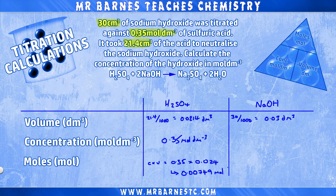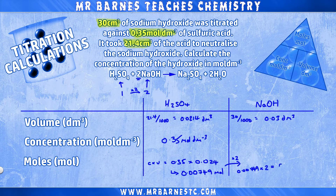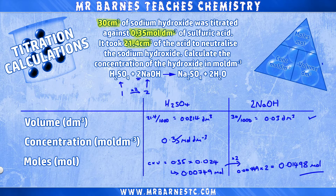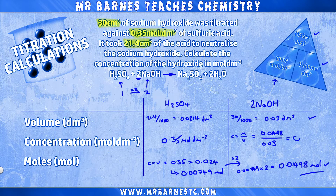Now here's the extra step. We have a ratio of 1 to 2 between H₂SO₄ and 2 NaOH, so whatever the moles of sulphuric acid is, I need to double it. So 0.00749 times 2 gives me 0.01498 moles of sodium hydroxide. The rest is exactly the same as before — concentration is moles divided by volume: 0.01498 divided by 0.03 gives a final answer of 0.5 moles per decimetre cubed.